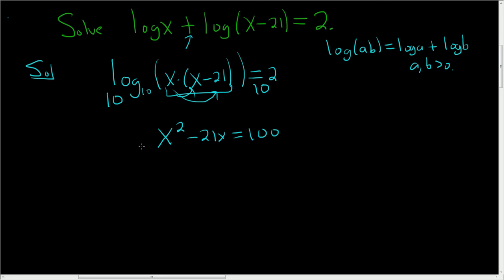This is a quadratic equation, so we'll set it equal to 0 and try to solve. So minus 100. This is equal to 0. This hopefully will factor. Let's try. We need two numbers that multiply to negative 100 and add to negative 21. I think negative 25 and 4 will do that for us. So we get x equals 25 and x equals negative 4.